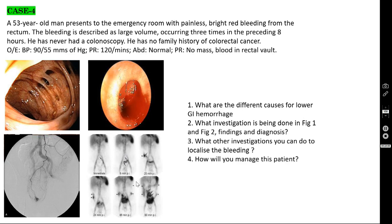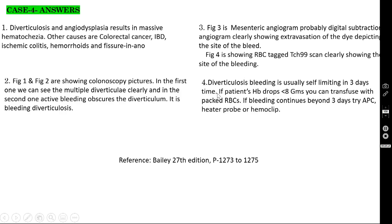The best investigation to localize bleeding is the Technetium-99 scan. Diverticulosis bleeding is usually self-limiting within three days. If hemoglobin drops below 8 g/dL, transfuse with packed red cells. If bleeding continues beyond three days, you can try Argon Plasma Coagulation, heat probe, or hemoclips. Surgical intervention is not normally done for bleeding diverticulosis.